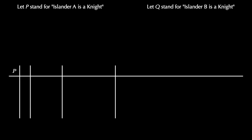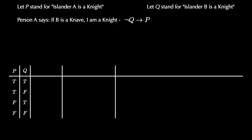As before, we will organize this information in a truth table. We let P stand for islander A as a knight, and Q stand for islander B as a knight. The truth table has a column for P and a column for Q, and four rows for the four possible truth situations. Person A says, if B is a knave, then I am a knight. This can be interpreted as not Q implies P. Because this is a conditional connective between two atomic propositions, there's exactly one place where it's false, and that's in the bottom row.